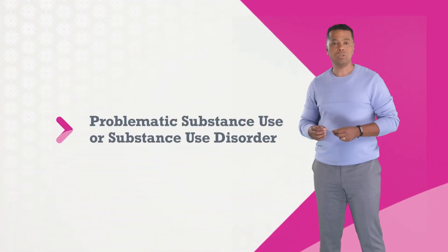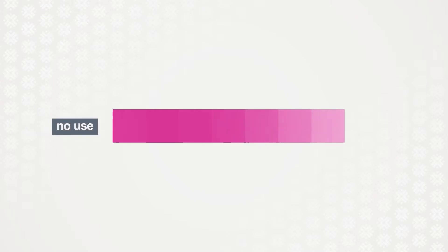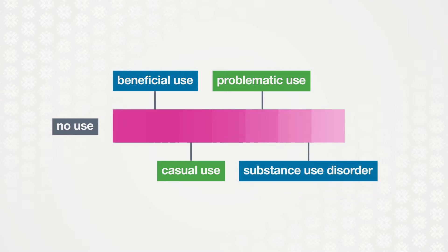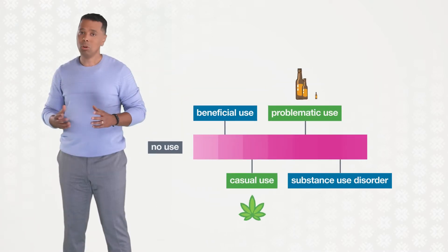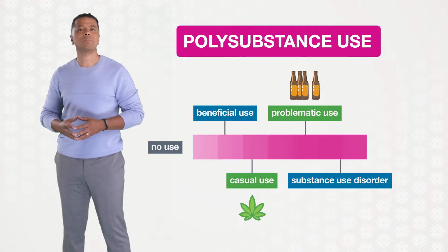To be less stigmatizing, we now call addiction problematic substance use or substance use disorder. Substance use varies from person to person. It can range from no use, beneficial use, or casual use, to problematic use, to a substance use disorder. This is known as the spectrum of use. People may use one substance alone or more than one substance at the same time, which is known as polysubstance use.